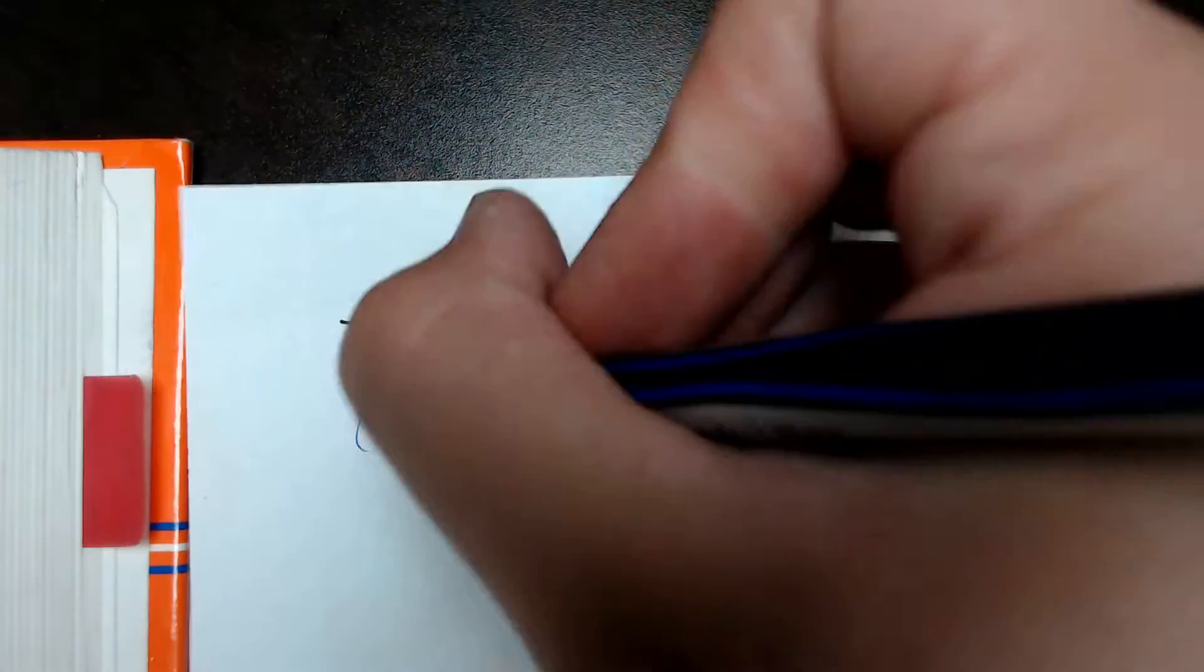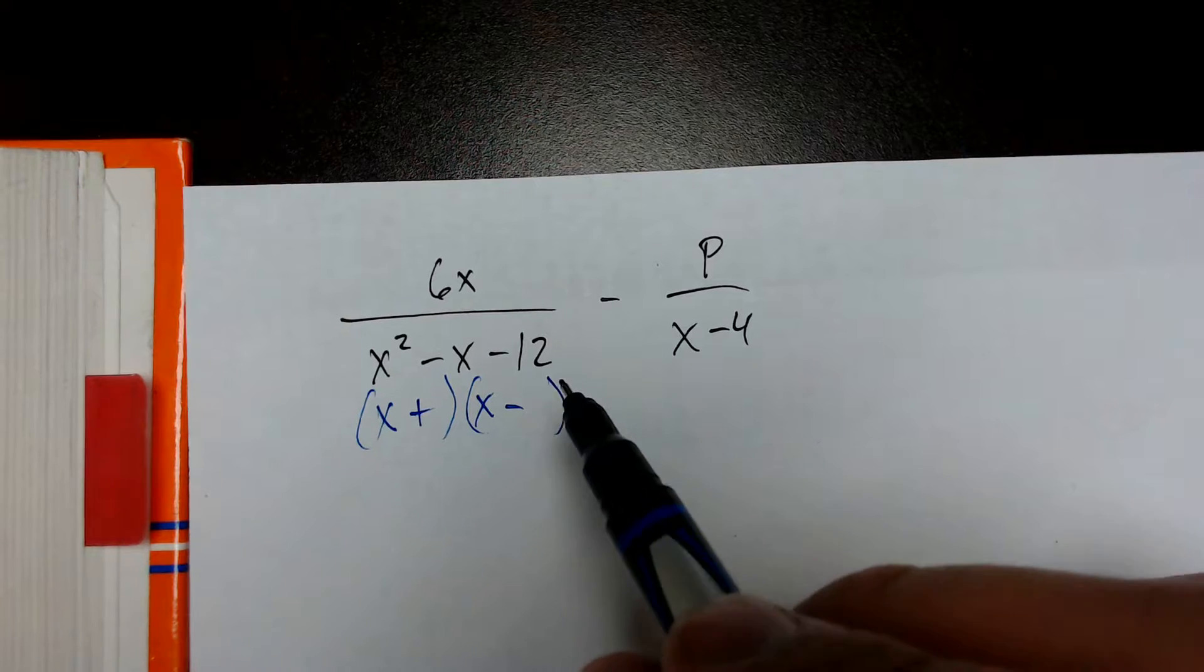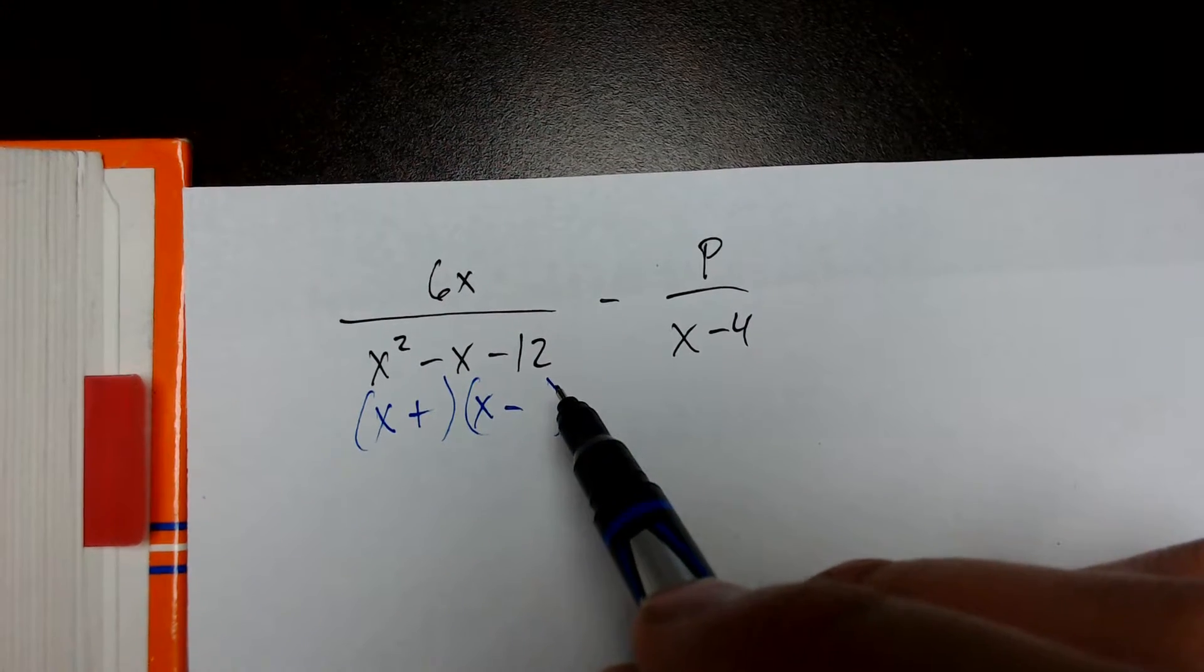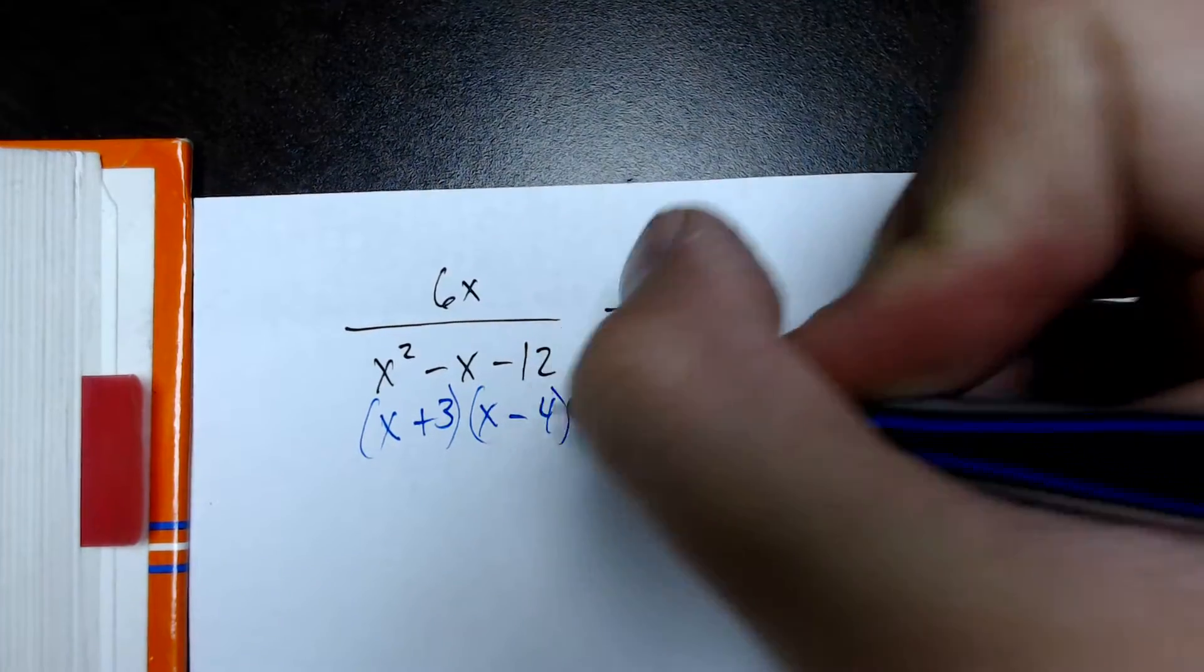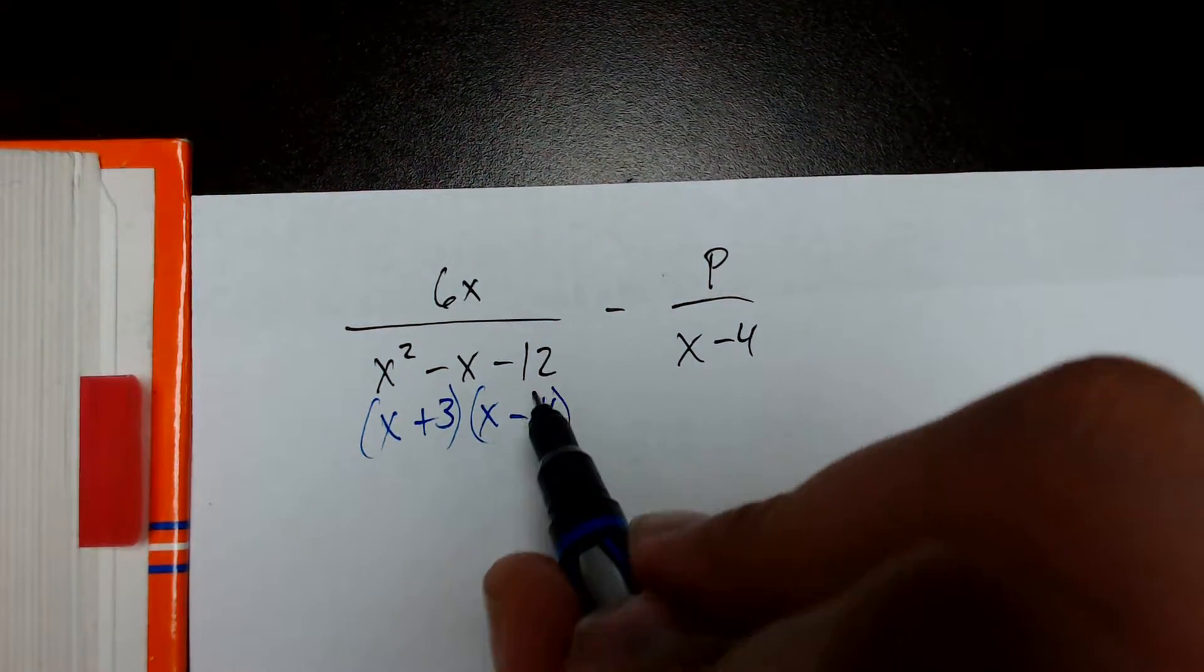If this is a minus, that means we're going to have a plus and a minus. Now we have to ask ourselves, what can multiply to 12 but then add to negative 1? Well, that would be 4 and 3. If we have positive 3, negative 4, they add up to negative 1, they multiply to negative 12.